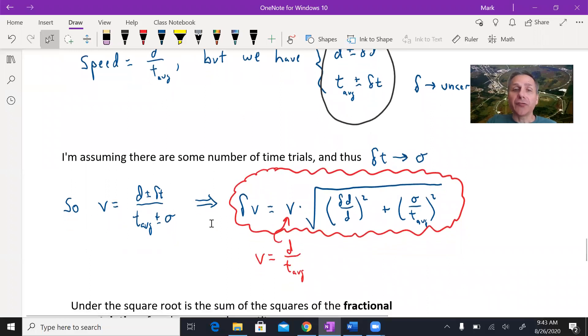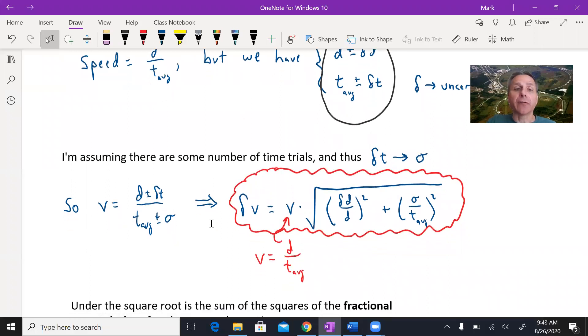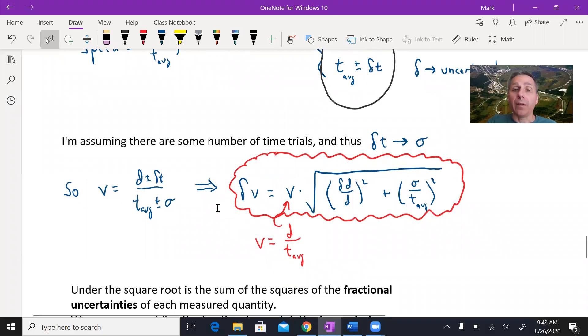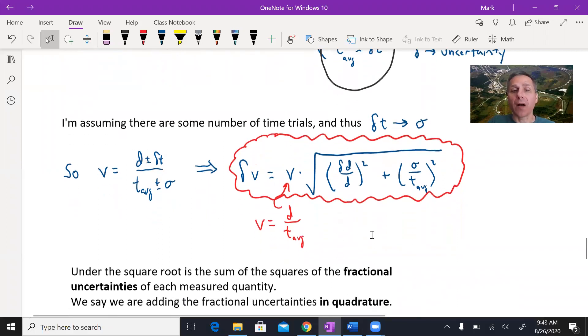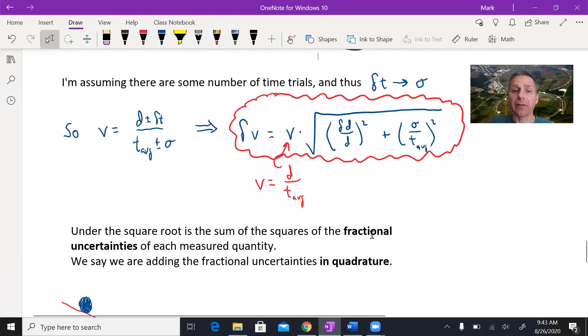This might look kind of strange if you've never seen anything like this before, but this little circled rule here is valid for any time you multiply or divide measurements to get a result. And it's called add in the fractional uncertainties in quadrature. A lot of fancy words there.